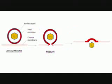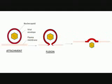Stage 2: Penetration. There are two general mechanisms viruses use for penetration. The first method is the direct fusion of the viral envelope with the cytoplasmic membrane of a host cell. The virus leaves its envelope behind, merging it with the host cell surface membrane, delivering the viral capsid into the cytoplasm of the host cell.